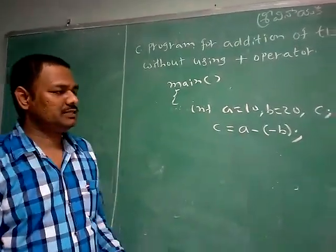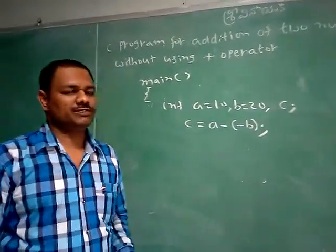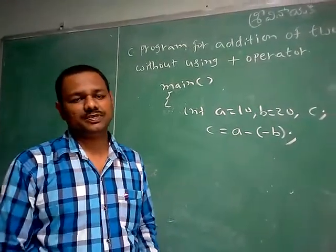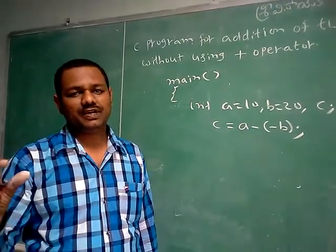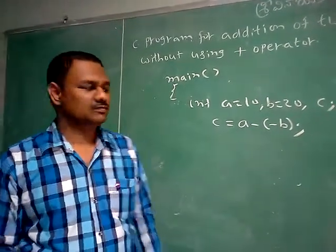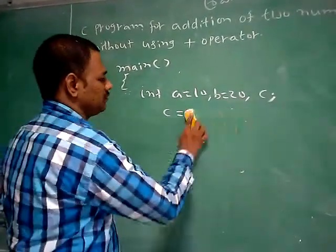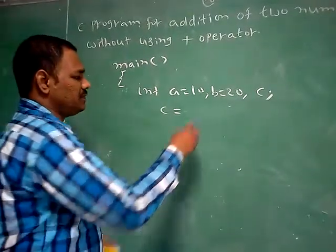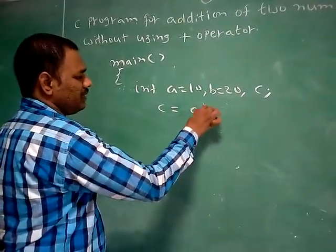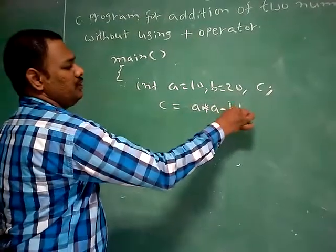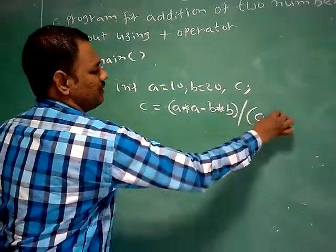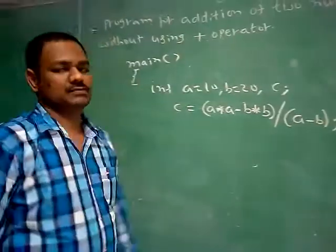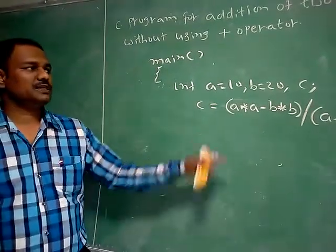The second solution: we can use the A square minus B square formula. What is A square minus B square? A plus B into A minus B. Instead of writing A plus B, we can write A square minus B square divided by A minus B. We can write A into A minus B into B divided by A minus B. This is the second solution without using the plus operator.